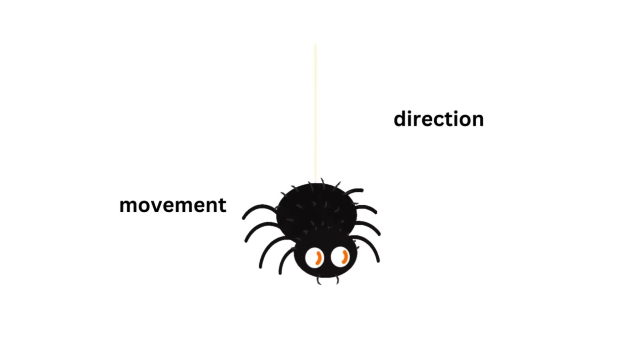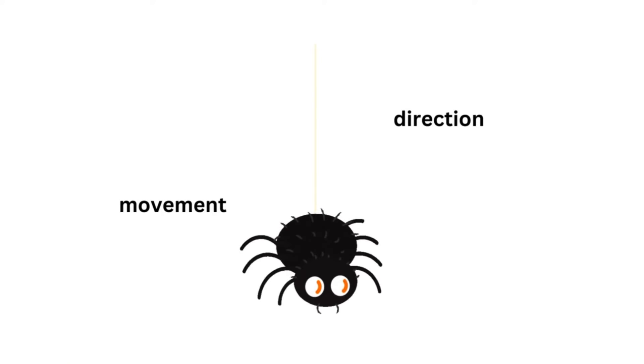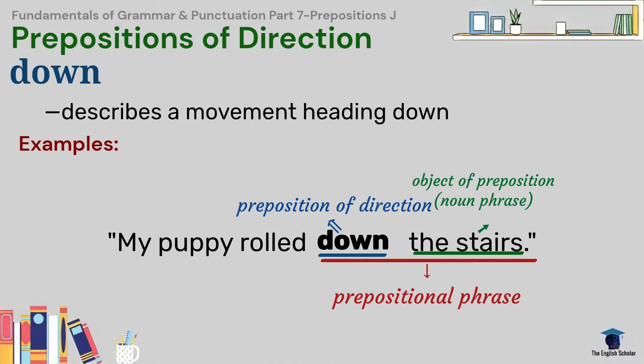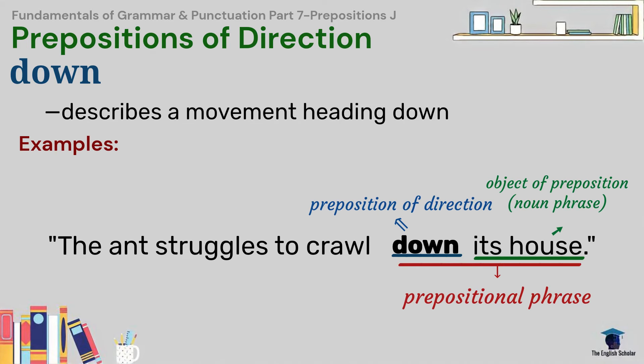Down describes a movement heading down. For example, my puppy rolled down the stairs. The ant struggles to crawl down its house.